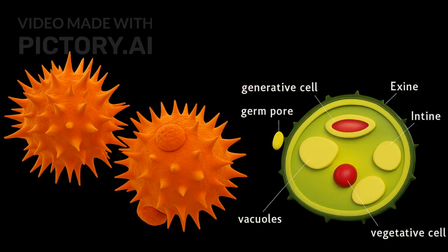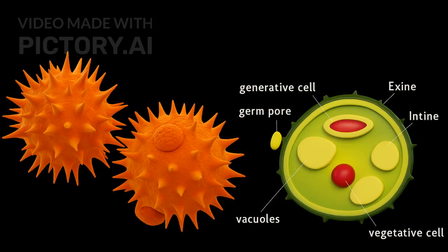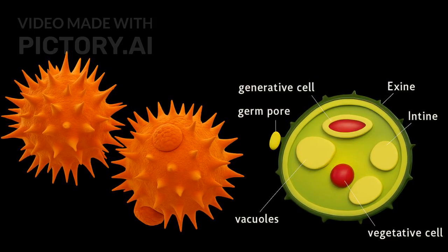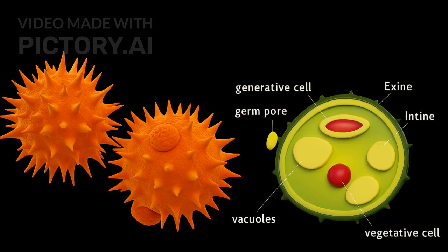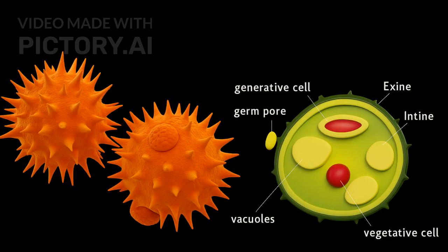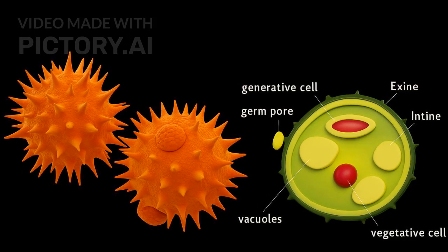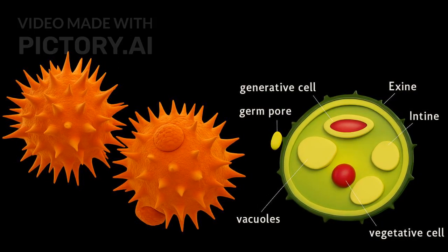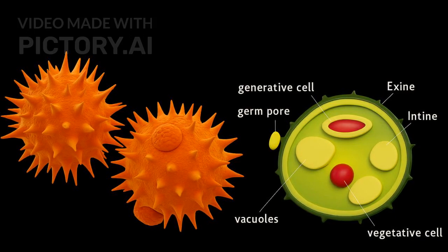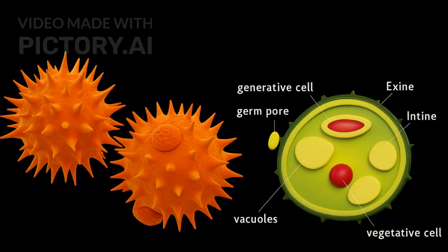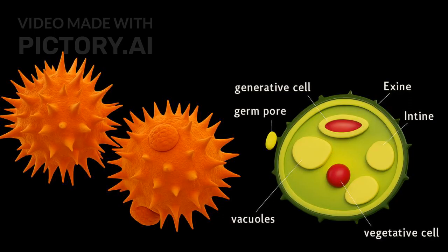Structure of pollen grain: The exine is the tough outer layer made of sporopollenin. The intine is the inner layer made of cellulose and pectin. In the mature stage, the pollen grain has two nuclei — the vegetative nucleus, which is larger and performs metabolic functions, and the generative nucleus, which divides to form two male gametes.